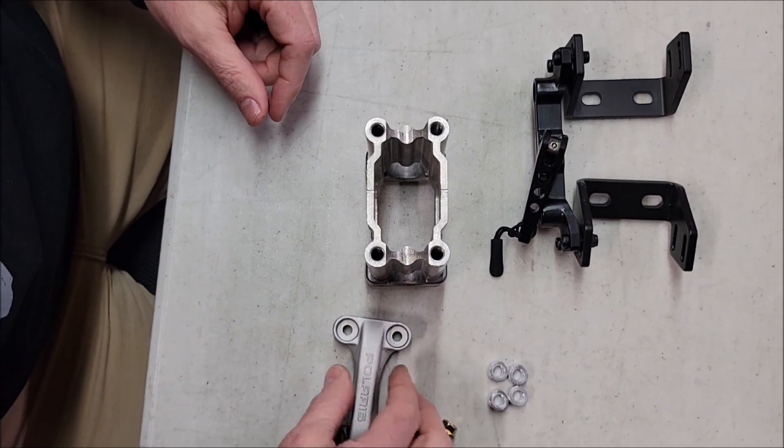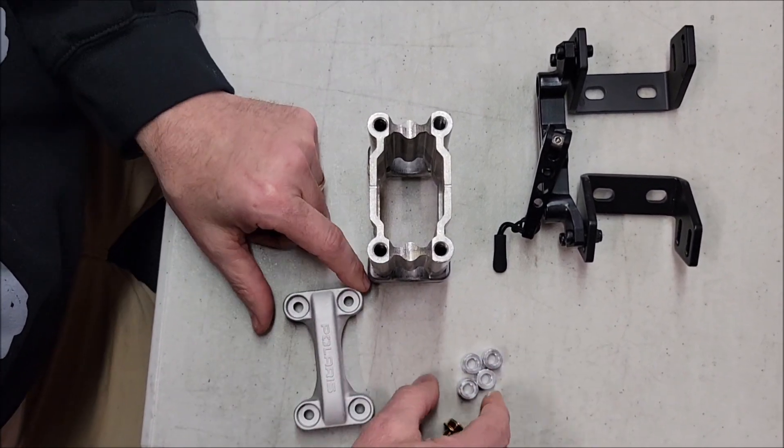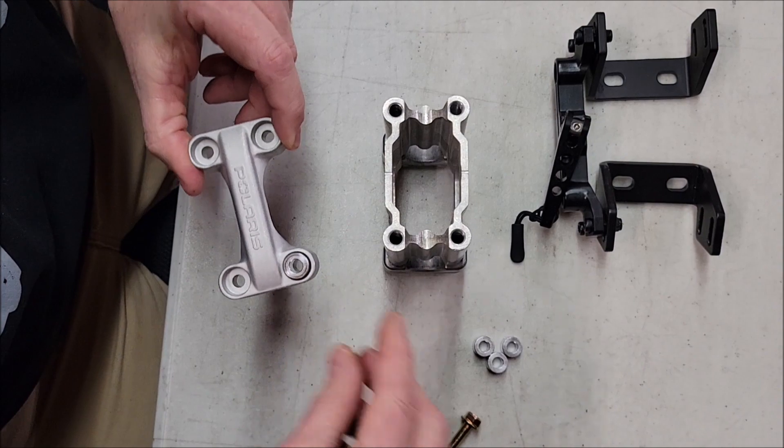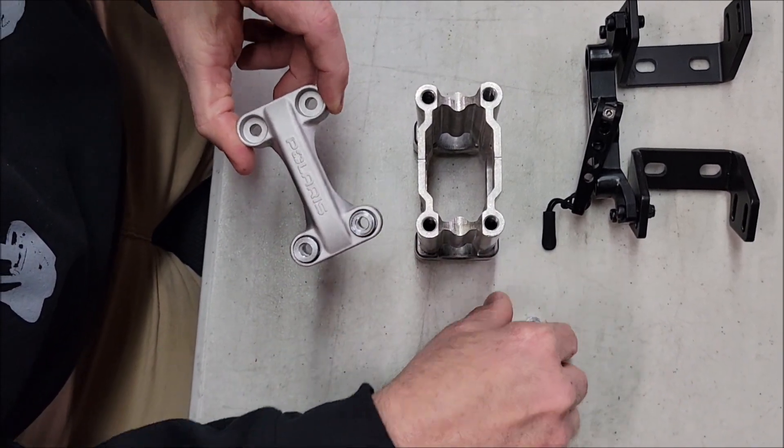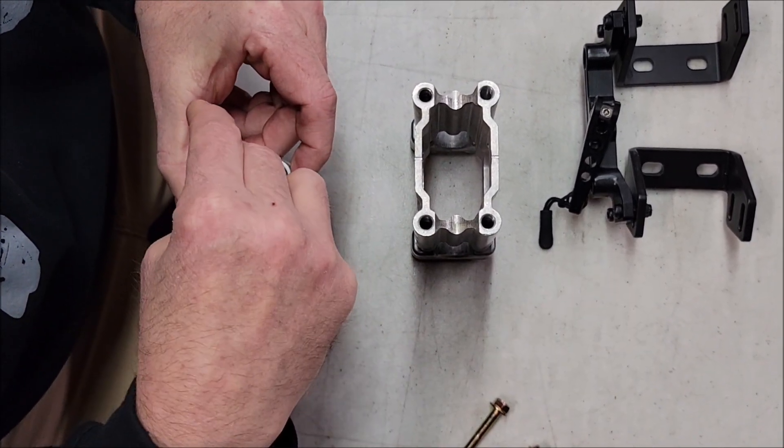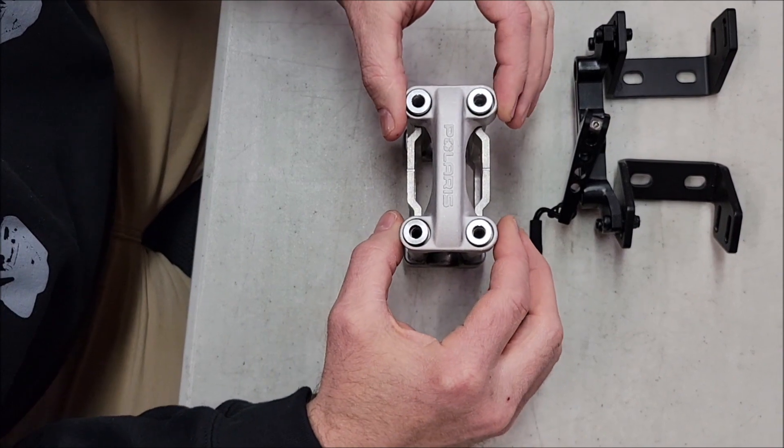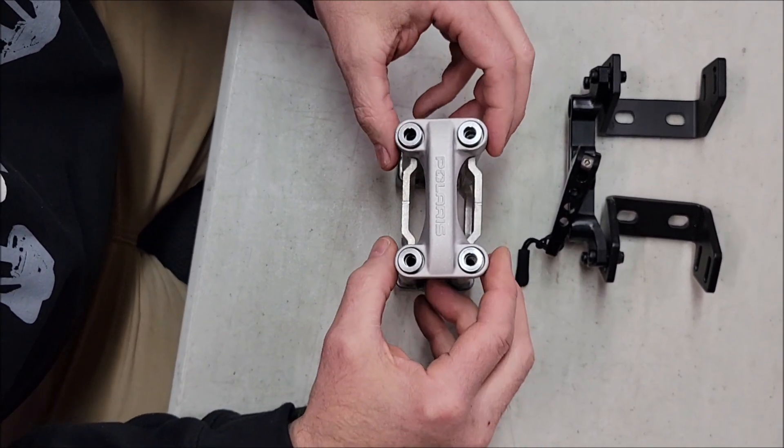Once you remove the top clamp, these four spacers that come with the kit are going to sit down in these cavities here to fill that void. You put the clamp back on. Remember the handlebars are still there.